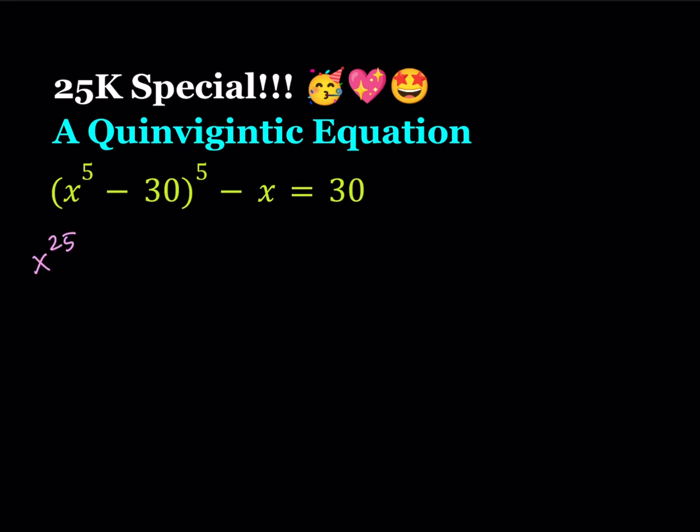Let me just show you what that looks like. You're going to get x^25 - 150x^20 + 9000x^15 - 270,000x^10 + 4,050,000x^5 and then minus x, which is interesting right at the end, minus 24,330,000 = 0. So that's our quinvigentic equation and we're going to be solving this.